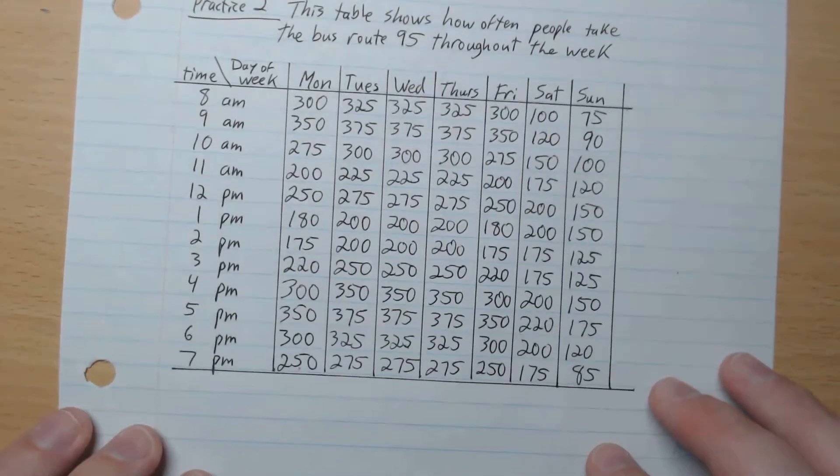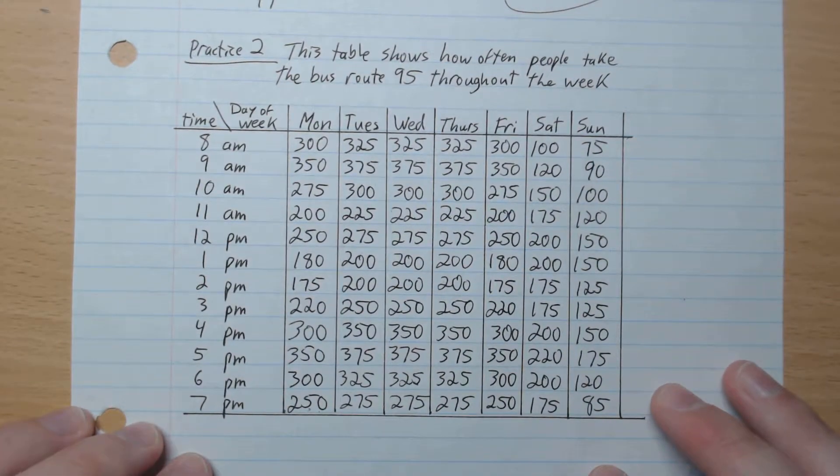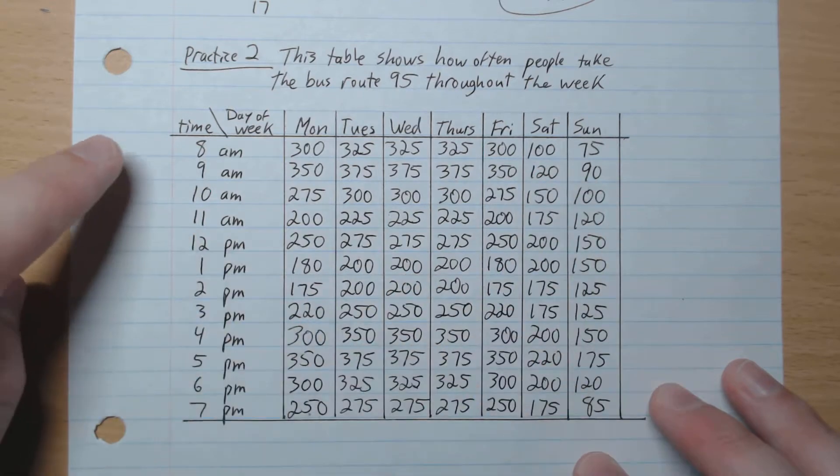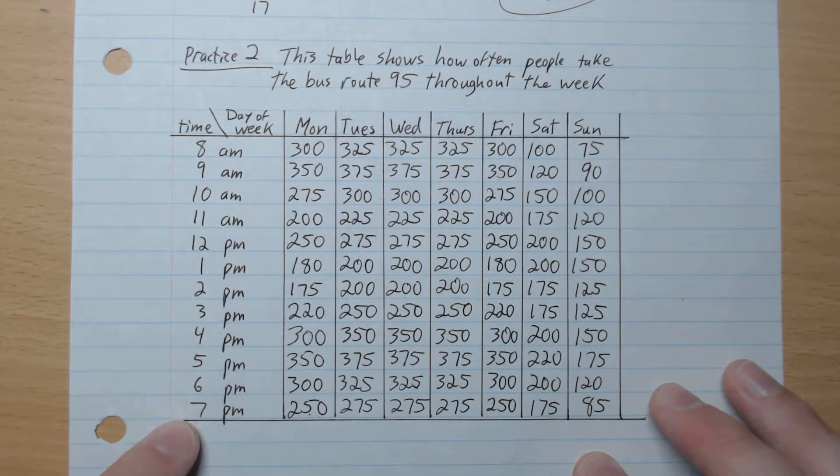Okay, practice number 2. So this table shows how often people take the bus route 95 throughout the week. So we got Monday, Tuesday, Wednesday, Thursday, Friday, Saturday, Sunday, and at different times throughout the day.